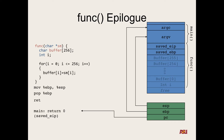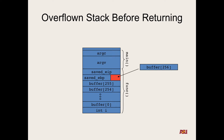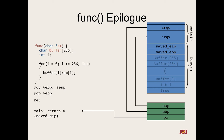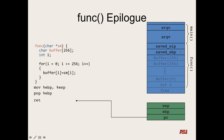With this off-by-one overflow, what can we change? The saved EBP — but just one byte. When our program accesses buffer bracket 256, it's actually referencing the least significant byte of the saved EBP. On x86, we can control the least significant byte of EBP. So if we can point this base pointer to anything — does that change execution immediately? Not right away.